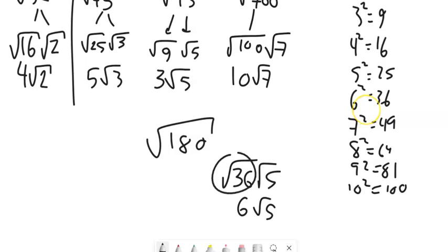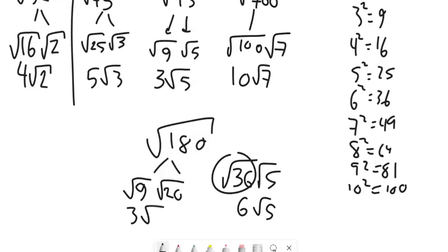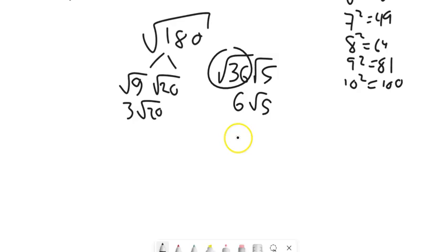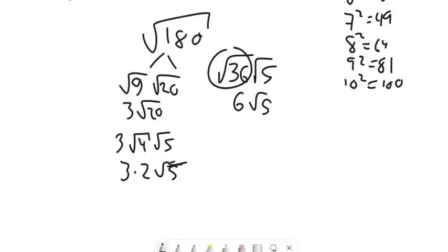But if you don't see the big piece right away, maybe you see that 9 goes into 180 because 9 goes into 18. So this is 9 times 20, giving 3 root 20. Then look at what's still inside: 20 — 4 goes into that. So break it up into root 4 times root 5. Root 4 is 2, so you have 3 times 2 times root 5, which is 6 root 5. Notice that gets you right to the same answer.